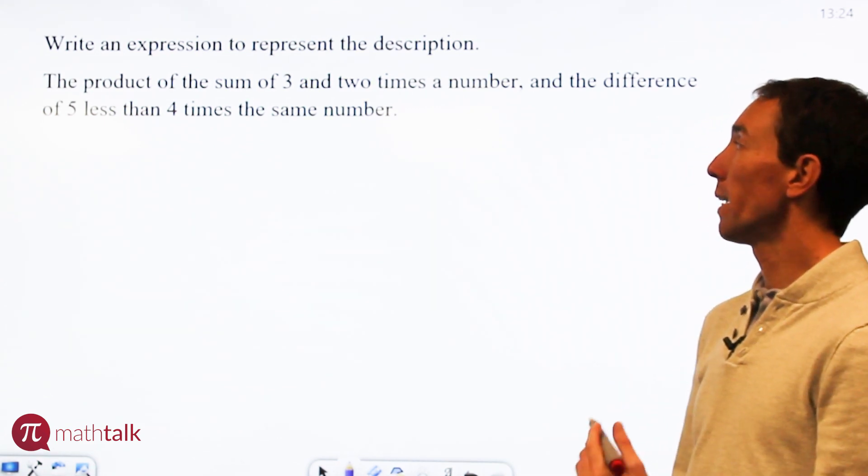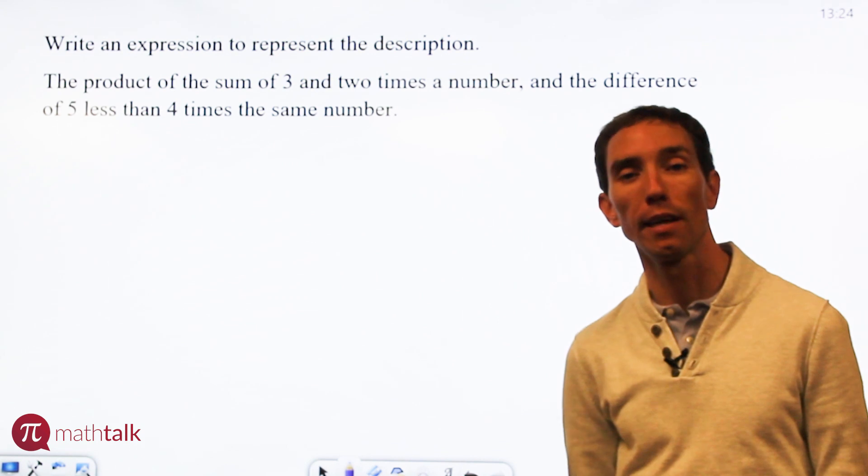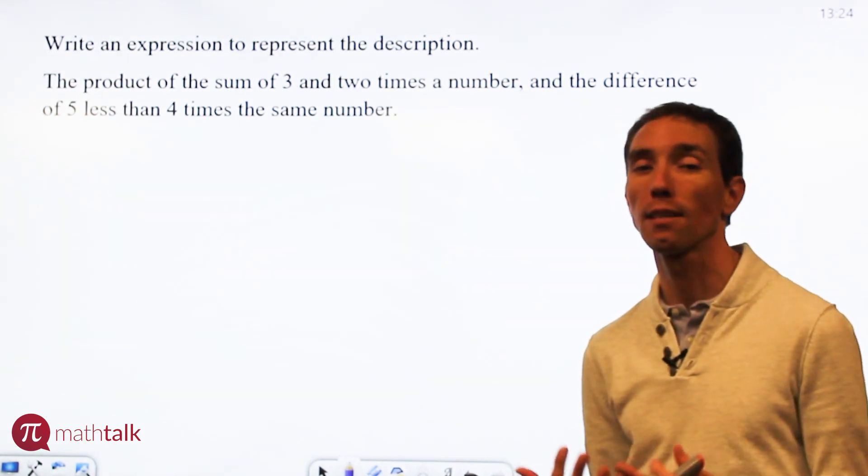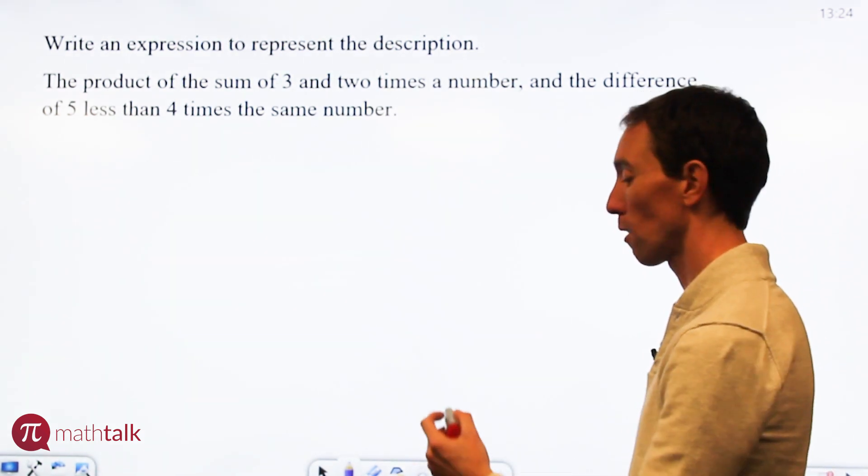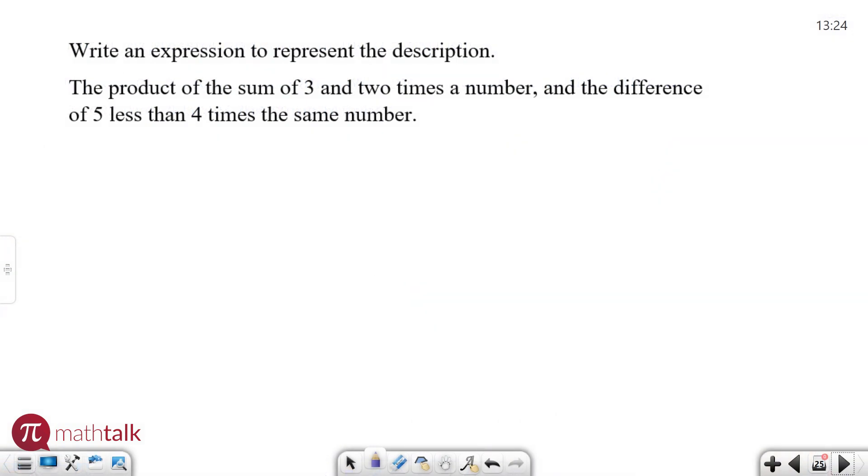We need to figure out which words represent which letters, functions, variables, things like that. So let's start picking this apart. The product. Product means multiply, so I'm going to be multiplying two things together.